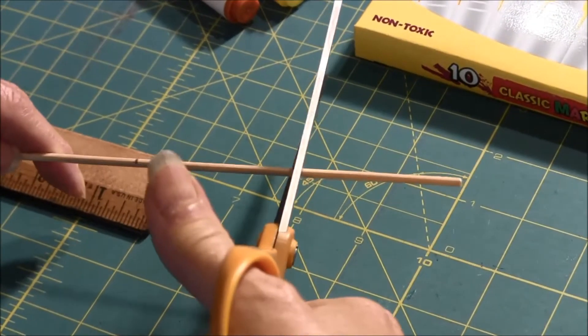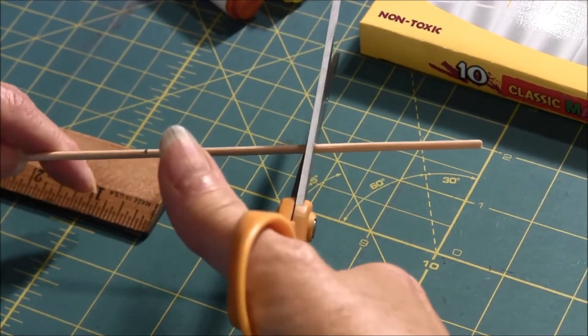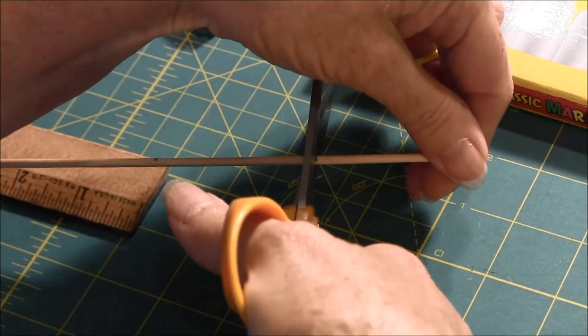Next, you're going to cut the dowel with a scissor where you had marked it.